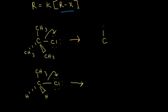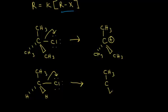For the first example, we get a carbocation with the positive charge on a carbon bonded to three other carbons — so we have a tertiary carbocation. For the second example, the carbocation has the positive charge on a carbon bonded to only one other carbon — a primary carbocation. Tertiary versus primary: we saw in our earlier video that tertiary carbocations are much more stable because of hyperconjugation, so they're more stable and more reactive — more likely to form.